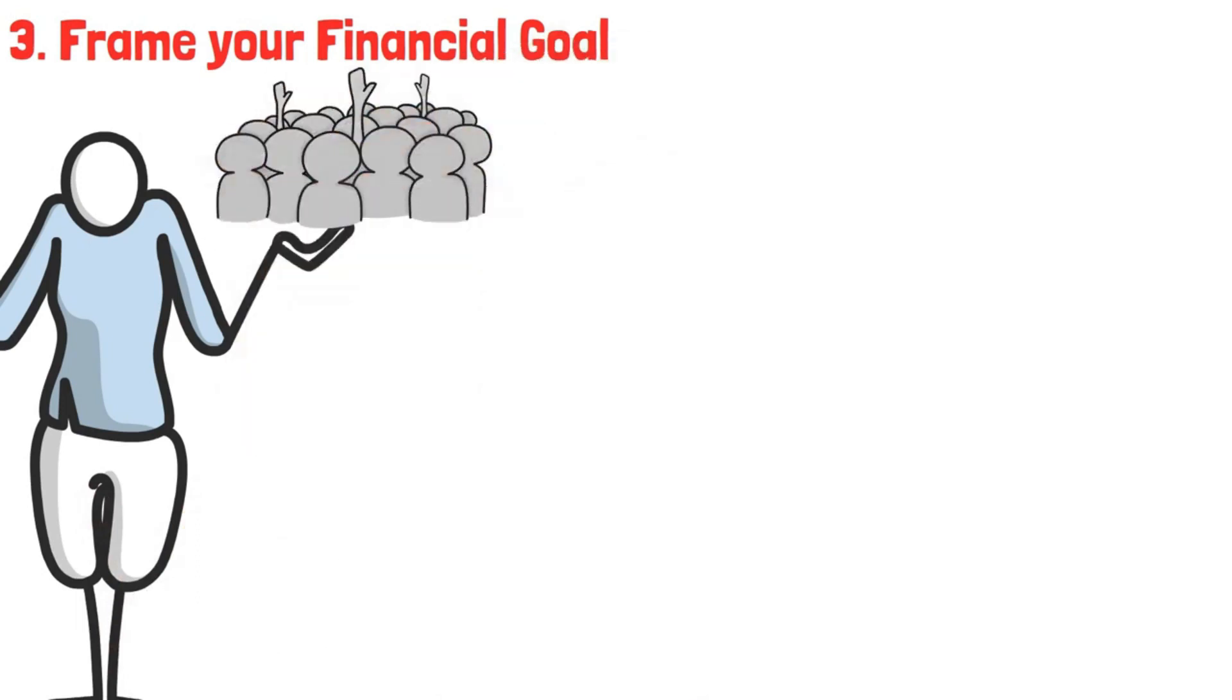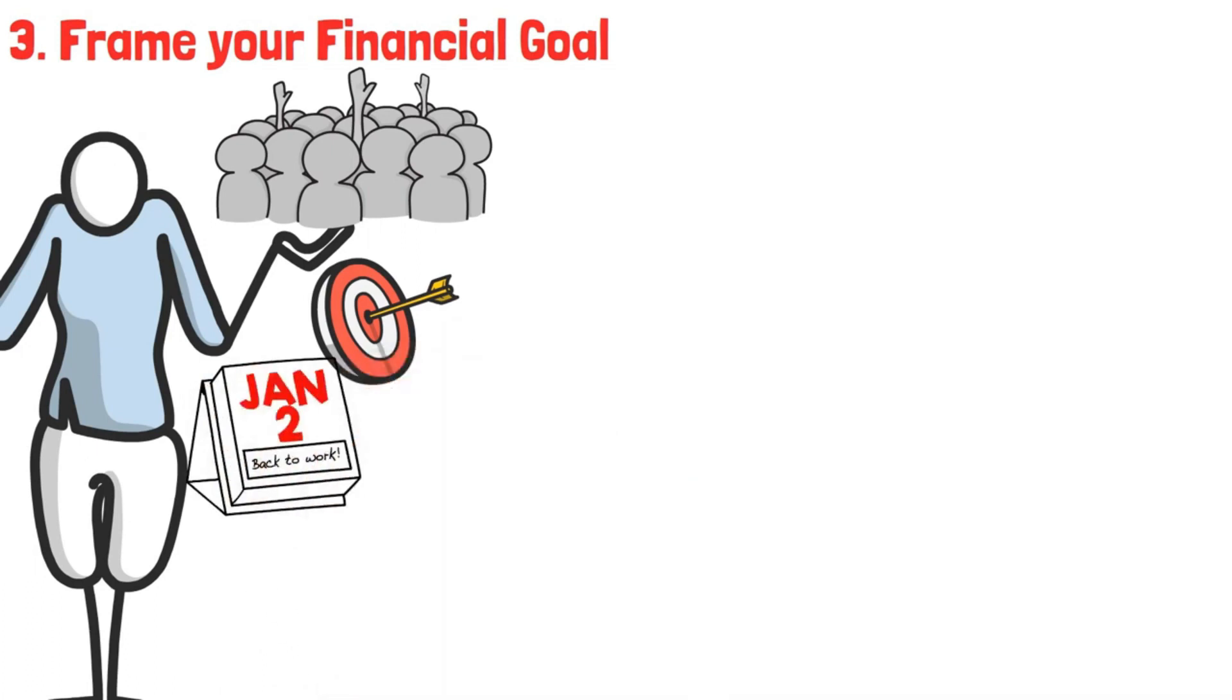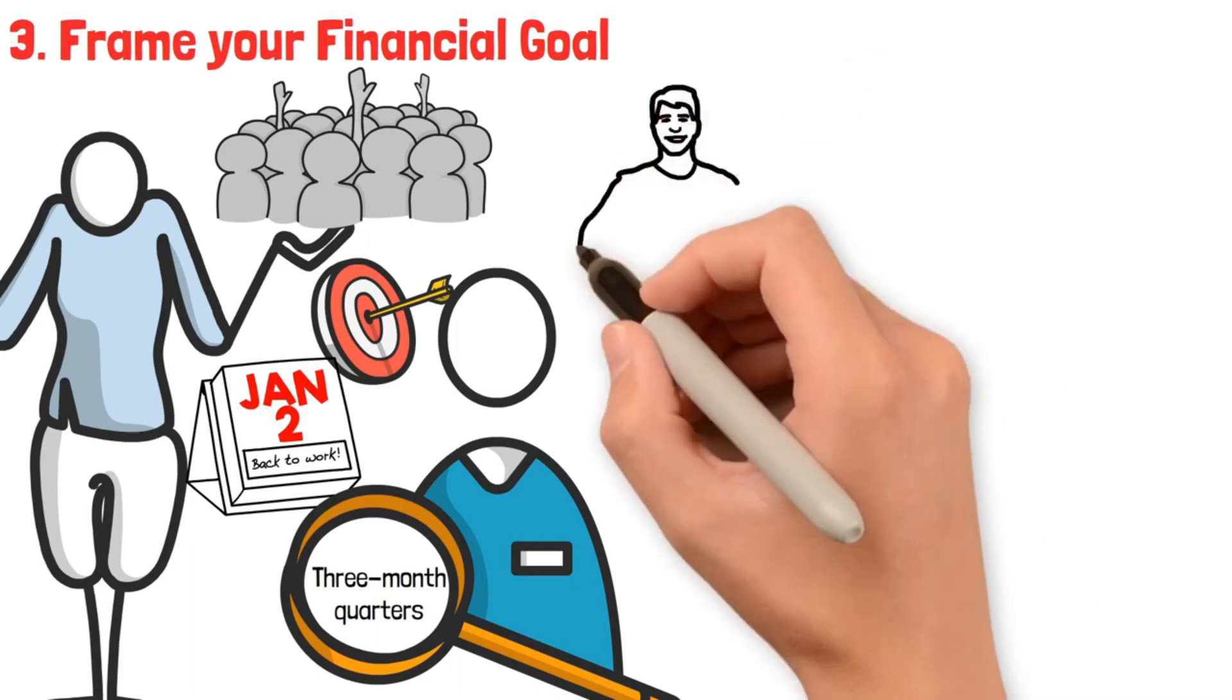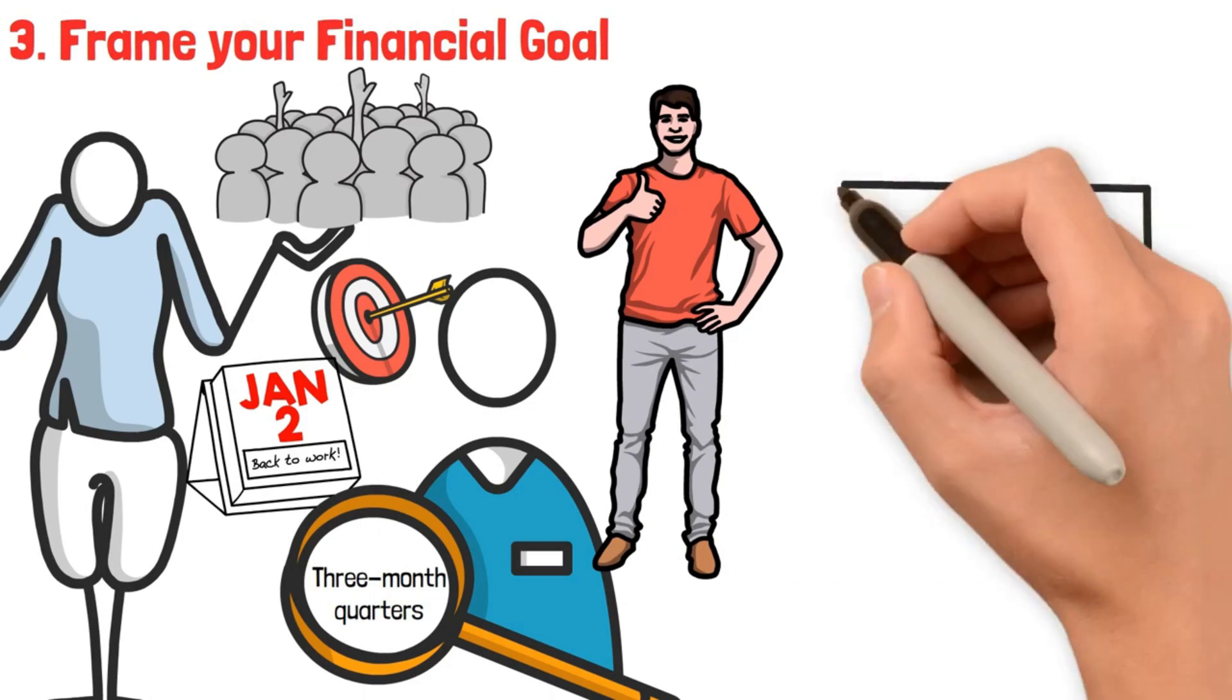This theory goes for most of us. Set a primary goal for yourself at the start of each year, then break it down into three-month quarters so you can track your progress as you go. These small goals make the larger ones appear more attainable and will give you a feeling of whether you're on the right track.